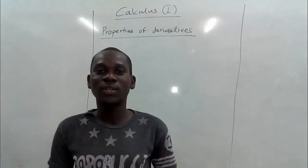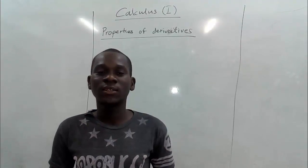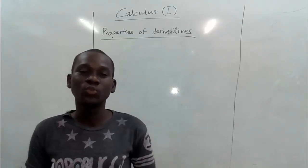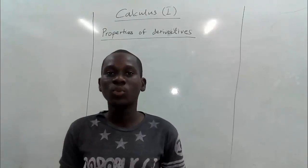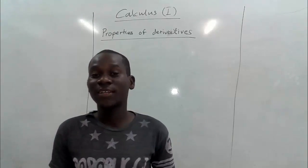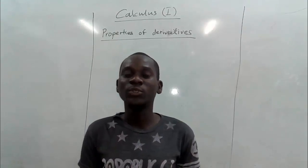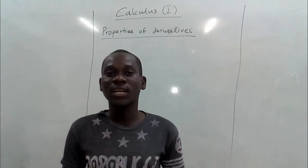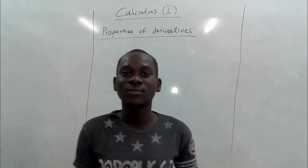Welcome back to Performance Solutions. In our previous lesson we talked about properties of derivatives and looked at two properties: the power rule and the constant multiple rule. Today we would like to continue with other properties, starting from property 3 which we call the sum, difference, and constant rule.